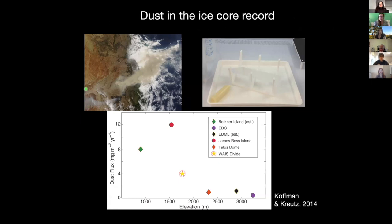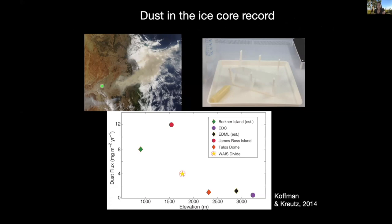So dust in the ice core record. This picture on the left hand side is a satellite image of dust transported from Australia. You can see the amount of dust being uplifted off the continent and transported over the oceans. Some of this dust makes its way to the polar regions where it's deposited on the ice sheet surface and incorporated into the ice core record. This image on the right is a picture of an ice core, and you can actually see a dust layer within it. We can use variations in the flux of dust and also the geochemistry of the dust to tell us things about what the climate was like at the source area and where this dust is likely coming from.